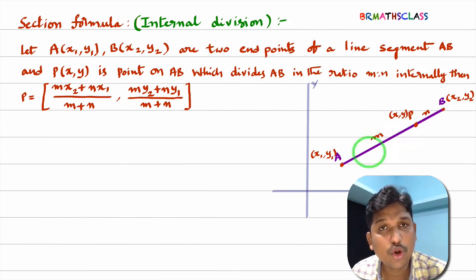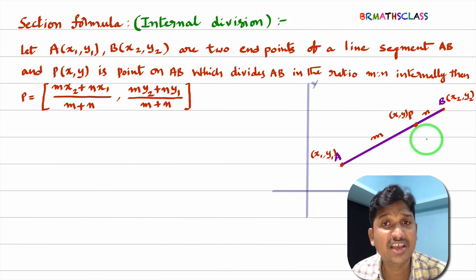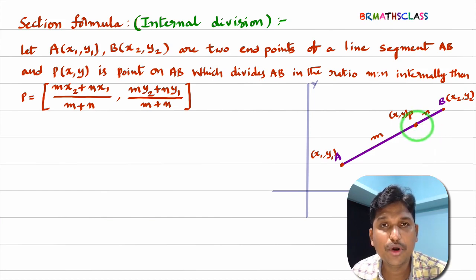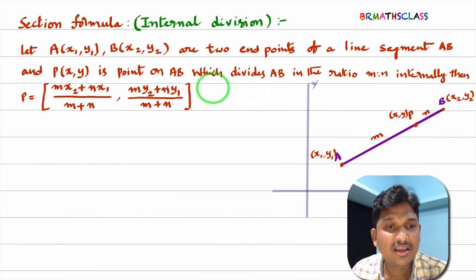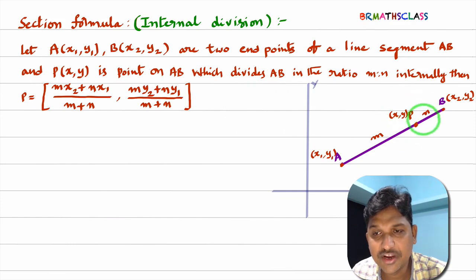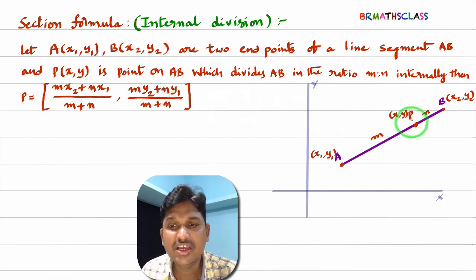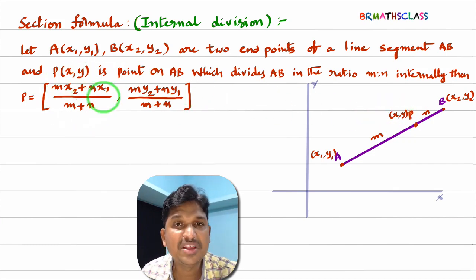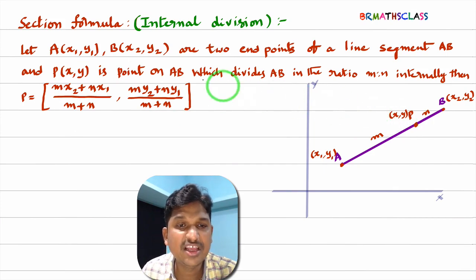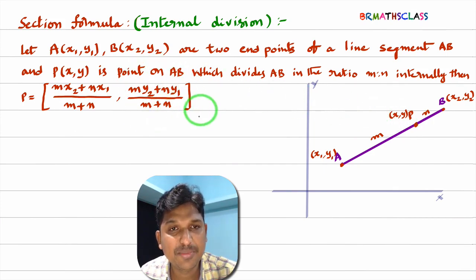If P is not in between A and B but P divides AB externally, we will learn that in the next class. Now P is a point which divides AB in the ratio M:N internally. Then the coordinates of P are: x = (Mx2 + Nx1)/(M + N) and y = (My2 + Ny1)/(M + N).